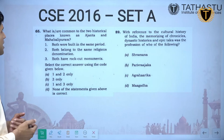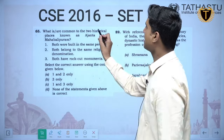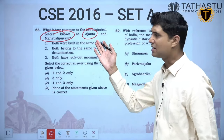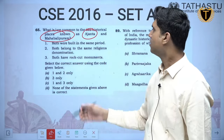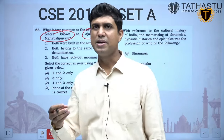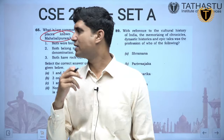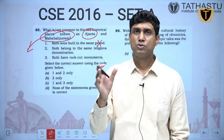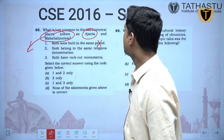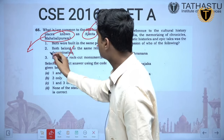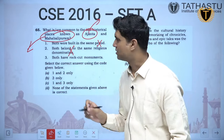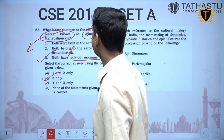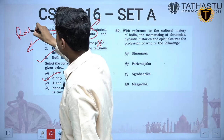What is common to Ajanta and Mahabalipuram? Ajanta is in Maharashtra and Mahabalipuram in Tamil Nadu. They were not built in the same period — Ajanta was built from Satavahana till Vakataka/Gupta period, while Mahabalipuram's rock-cut caves were constructed during the Pallavas. They don't belong to the same religious denomination — Ajanta is Buddhist, Mahabalipuram is Hindu. Both do have rock-cut monuments, so only statement 3 is correct.